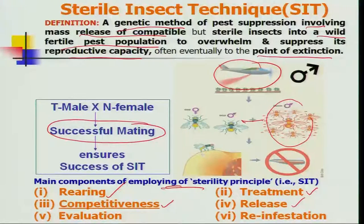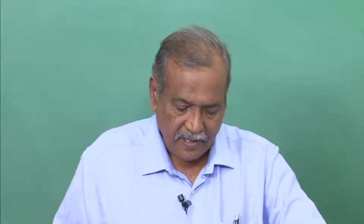The fourth principle is release technology — how to release, when to release, and how many insects to release are important questions that must be standardized before a large-scale SIT program is initiated. Fifth is the evaluation procedure — what is the impact of the release program and what assessment methods are used must be standardized. Sixth is reinfestation — at the end of the season some population remains unsterilized, multiplying in the next season to cause economic damage, so a buffer zone of sterile insect release must always be maintained.